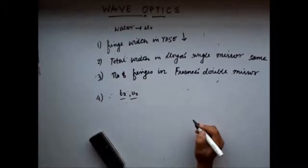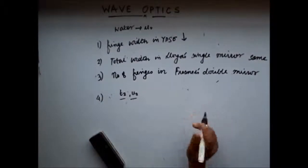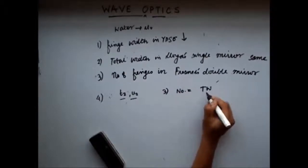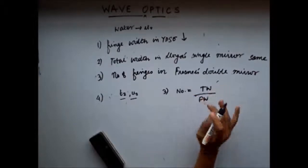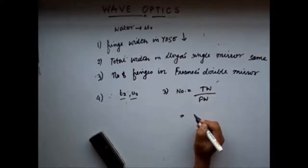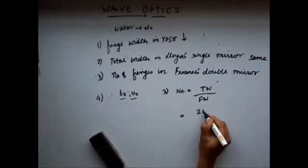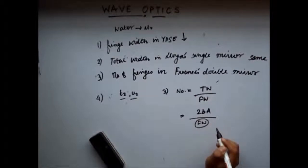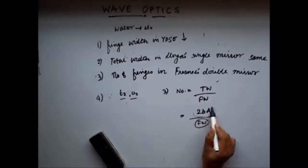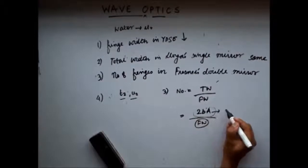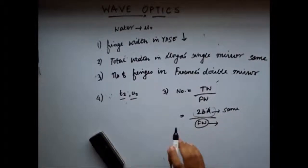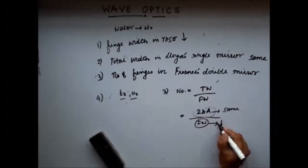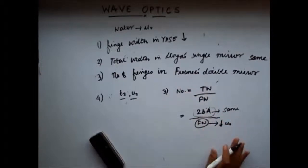Now let's move on to the third case: the number of fringes in Fresnel's double mirror. The number of fringes is given by the total width of the fringes divided by the fringe width. The total width of the fringes is 2·b·a, and since b and a are geometrical distances, this remains the same. The fringe width decreases by a factor of mu naught.